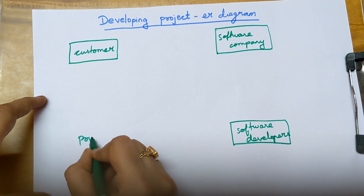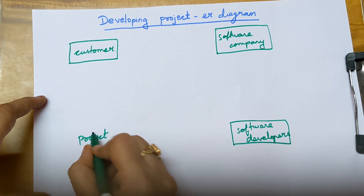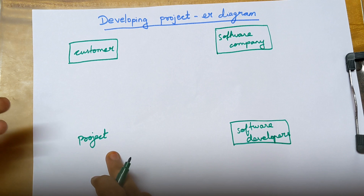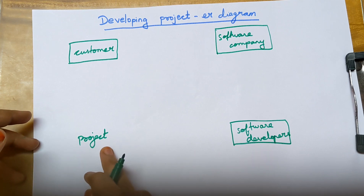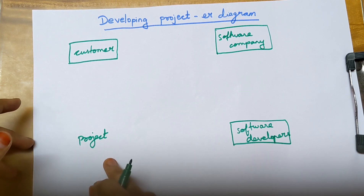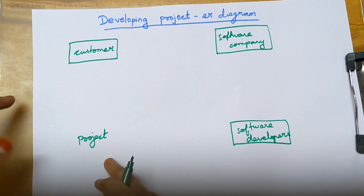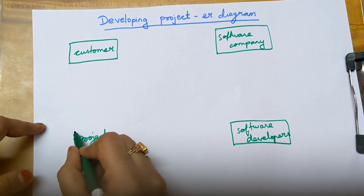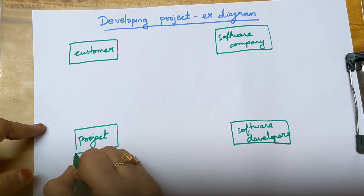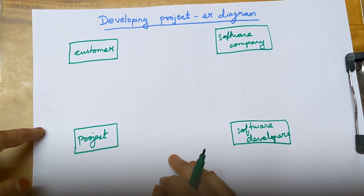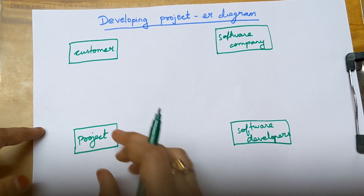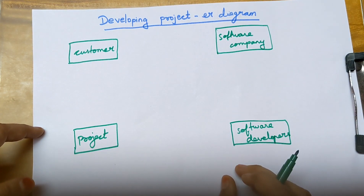The next entity is project. If you take project, it is not physically existing but it is conceptually existing. A project is given to some person and that person has to do the project, so it is happening conceptually. Therefore project is an entity and must be written inside a rectangular box. The second step is we need to write the corresponding attributes for each entity. An attribute is nothing but a characteristic of an entity.